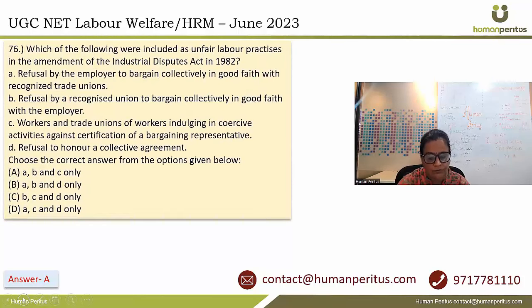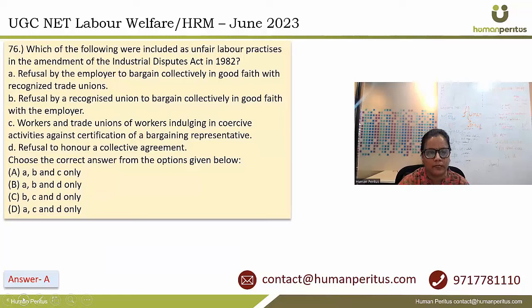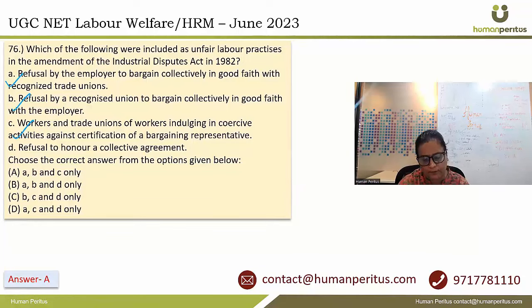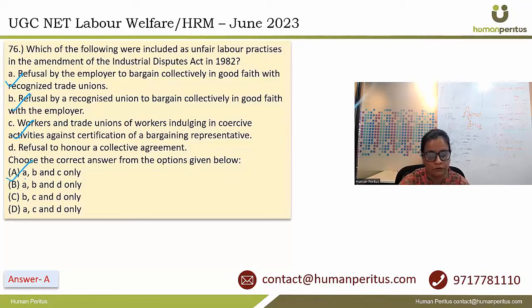Which of the following were included as unfair labor practices in the amendment of the ID Act in 1982? Options A, B and C are unfair labor practices added by way of Schedule 5 to the Act. The answer is option A. Refusal to honor a collective agreement is also noted.